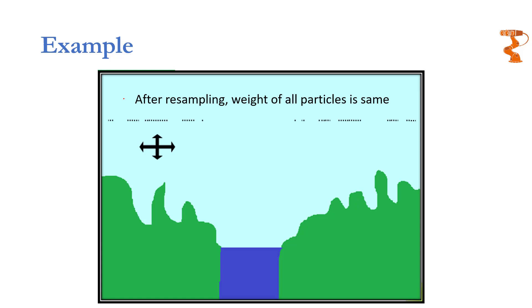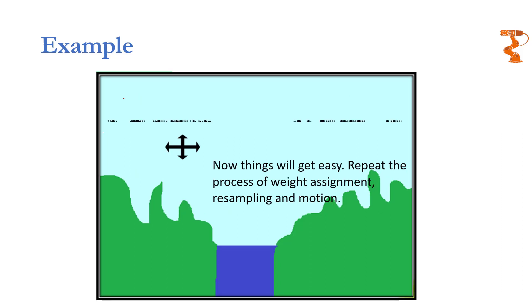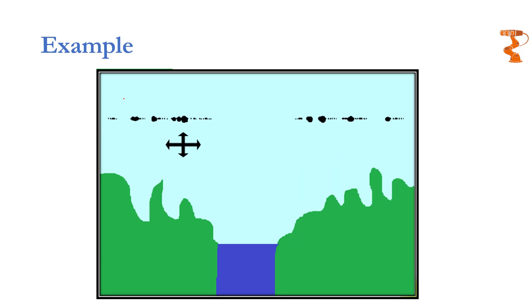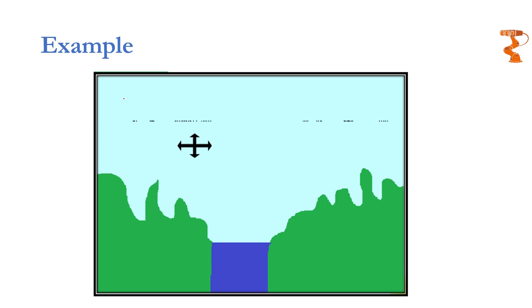These particles are now representing probable locations of our quadcopter. As the last step of the first iteration, we know that our quadcopter is moving in horizontal direction, so we will move our particles randomly in horizontal direction. In the next iteration, we again observe height and based on it assign weights to all particles. We perform importance resampling once again, and application of the motion model will yield the new locations of the particles.